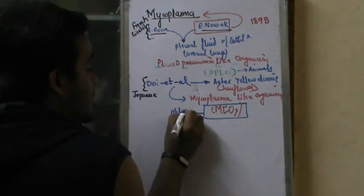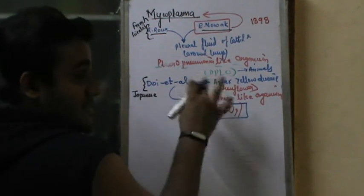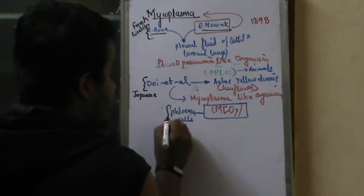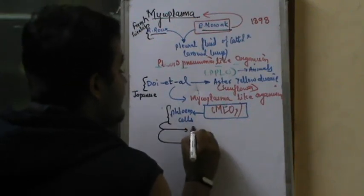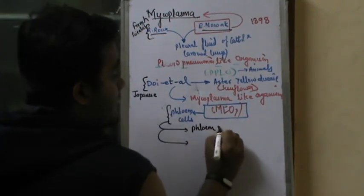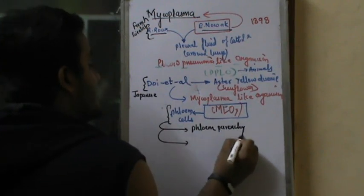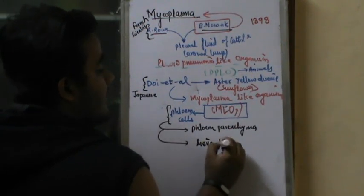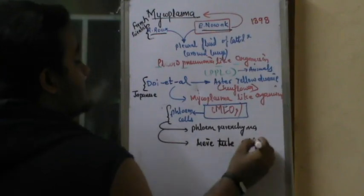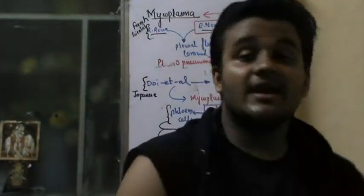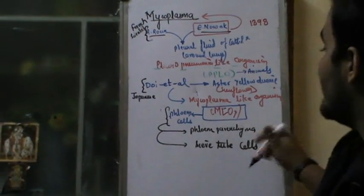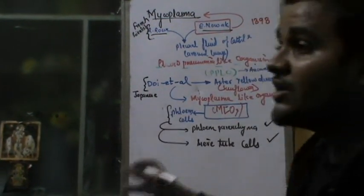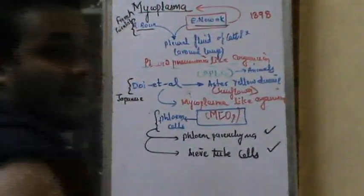Doi named these particular organisms as Mycoplasma-Like Organisms (MLOs). PPLOs cause disease to animals, but Mycoplasma-Like Organisms (MLOs) affect plants. MLOs only affect the phloem cells — specifically phloem parenchyma and sieve tube cells — not the xylem cells. This is an NCERT example.